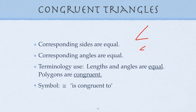The symbol for congruent is that equal sign with a squiggle on top of it, and we read it 'is congruent to.'